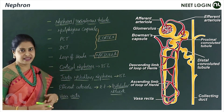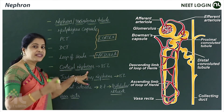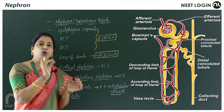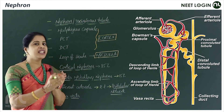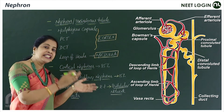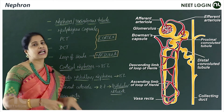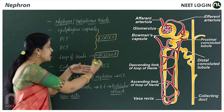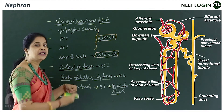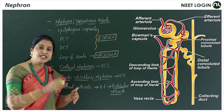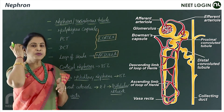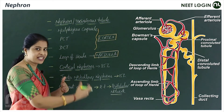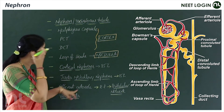The two types of nephrons are cortical nephrons and juxtamedullary nephrons. In cortical nephrons, the loop of Henle is short and only a small part extends into the medullary region — these are the majority of nephrons. In juxtamedullary nephrons, the loop of Henle is much longer and the major part is present in the medullary region.